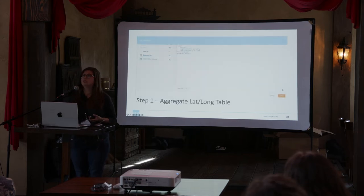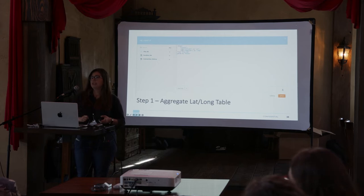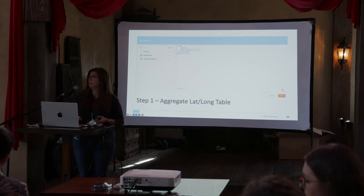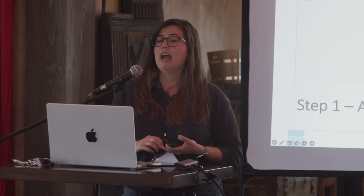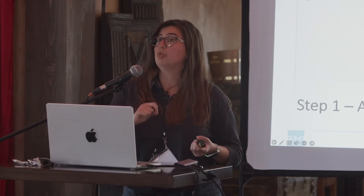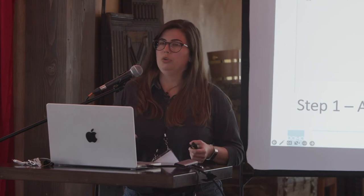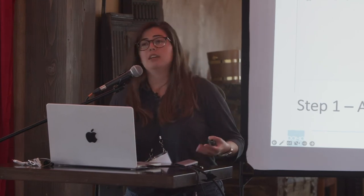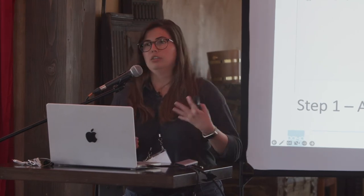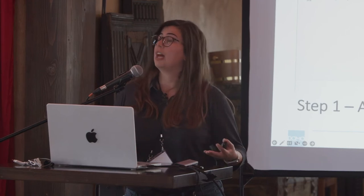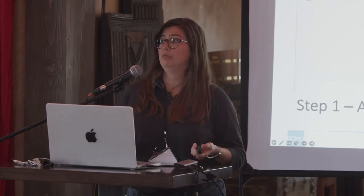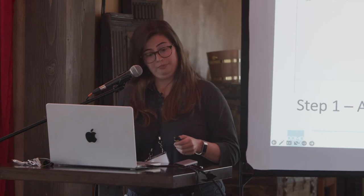The first step is to take the latitude and longitude table from the Domo Dimensions connector and aggregate it — take the average latitude and longitude grouped by postal code. We do this because the same zip code often appears multiple times in that table and we only want one row.